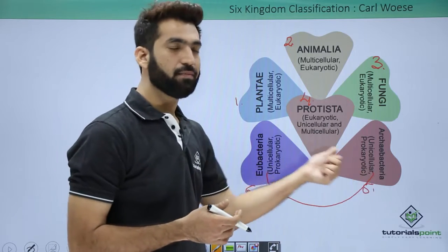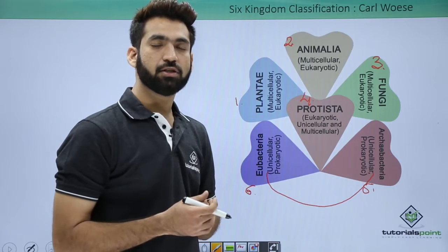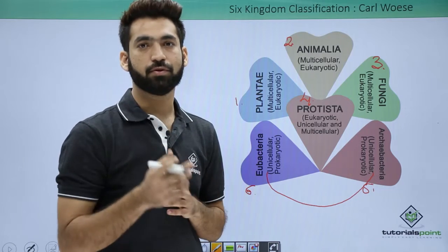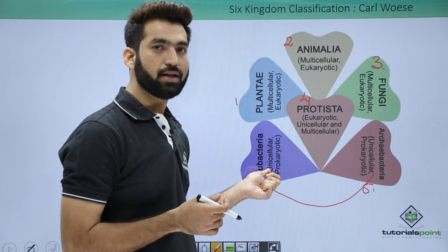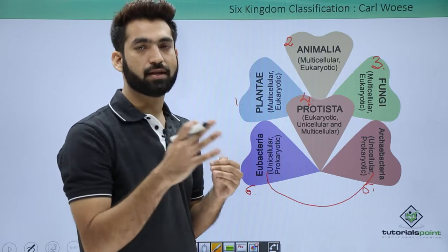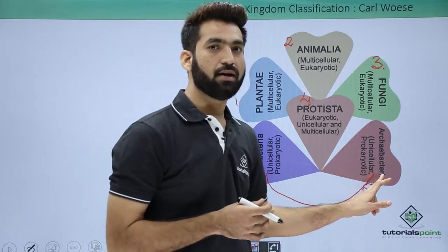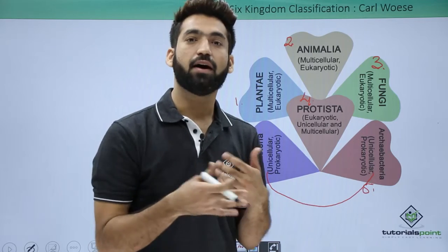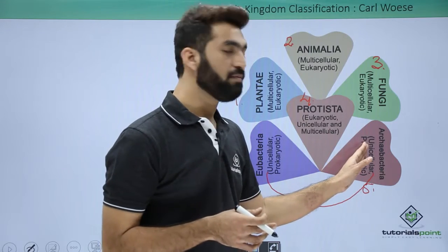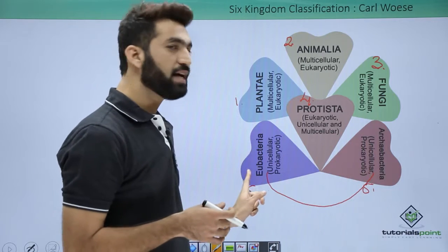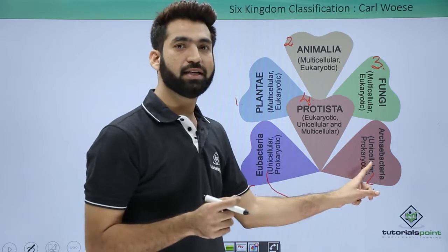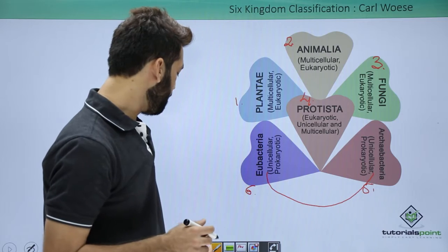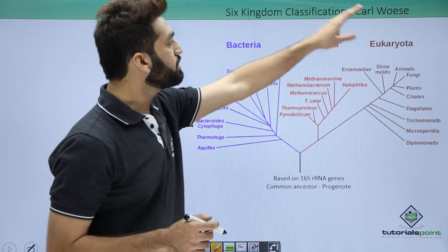There is one more difference between Archaebacteria and Eubacteria regarding the cell membrane. The cell membrane in most organisms is made up of lipids and proteins. In Eubacteria, the lipids have simple chains, but in Archaebacteria, branching among the chains occurs. Because of this branching, Archaebacteria are found in harsh habitats. So remember: simple chains in Eubacteria, branched chains in Archaebacteria when talking about cell membrane structure.